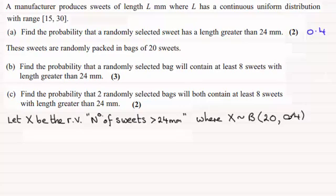So when it comes to part B then, we've got to find out that the probability of at least 8 sweets then have a length greater than 24 millimeters. So we're looking for the probability of X being greater than or equal to 8.